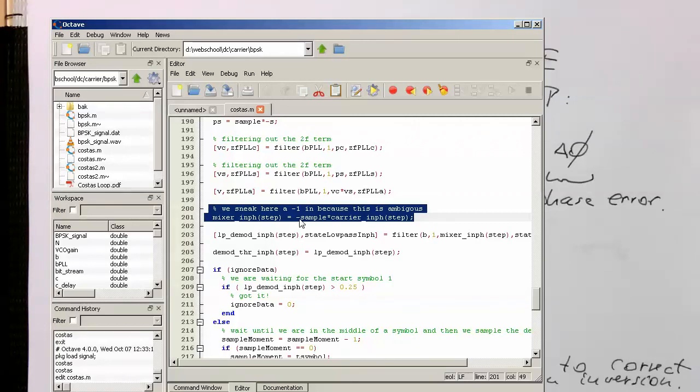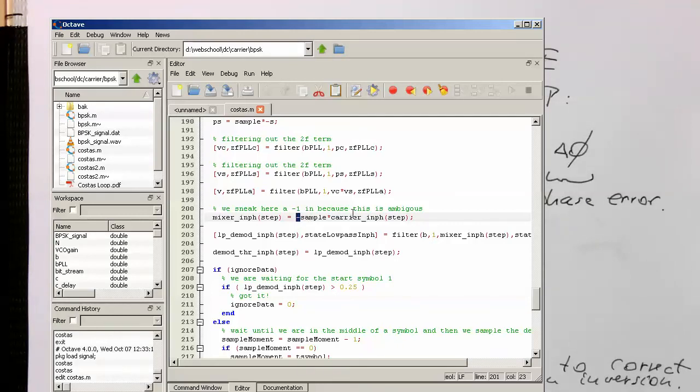Otherwise, you know, the pacman image would be basically inverted. So I just sneaked in this negative sign here in the code just to fix it. But that's obviously just a hack.